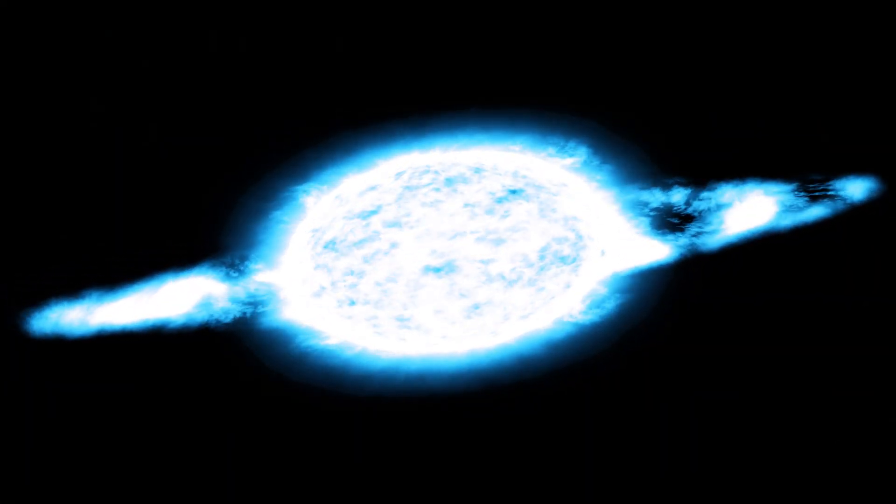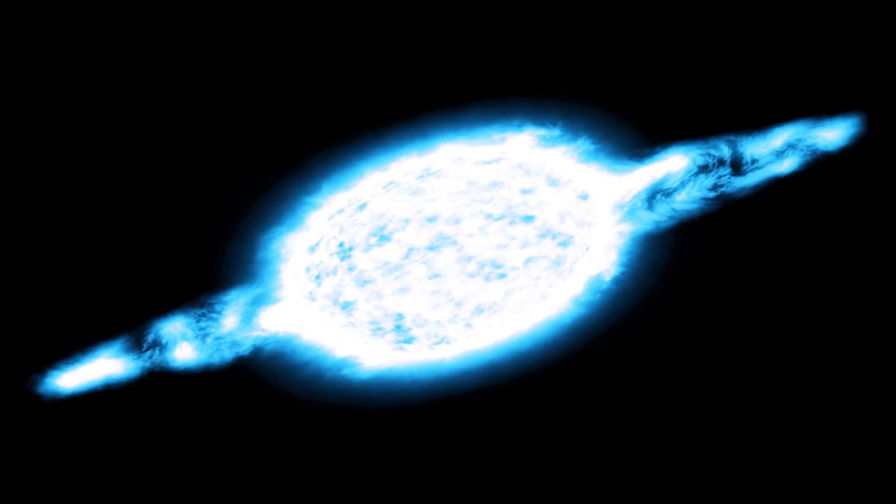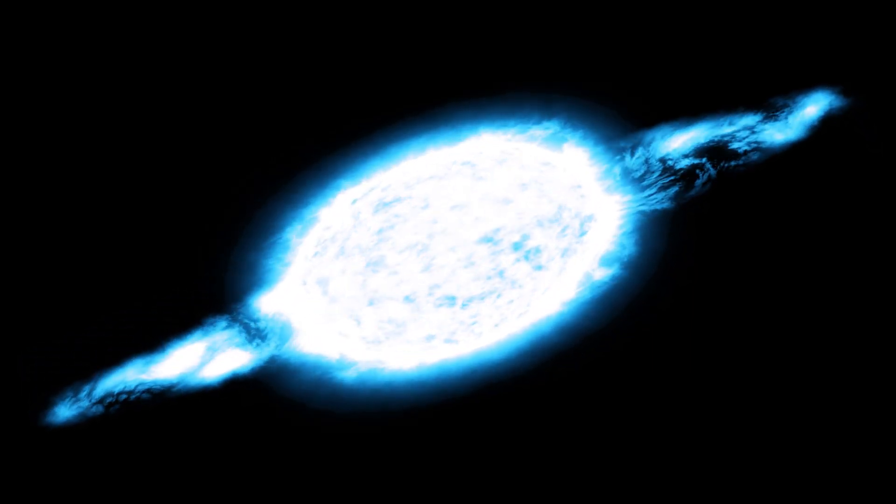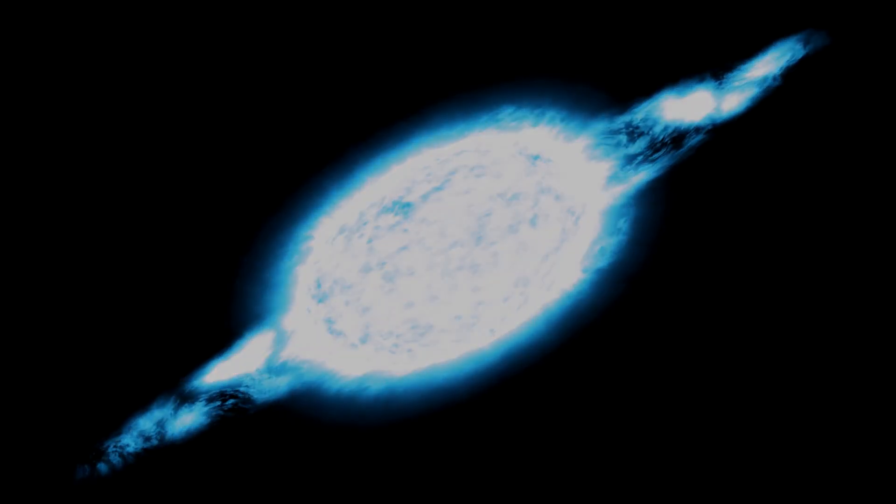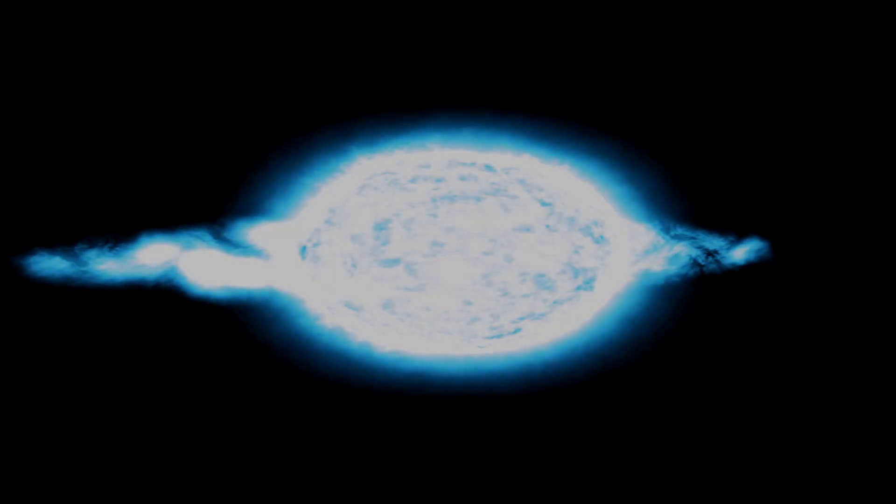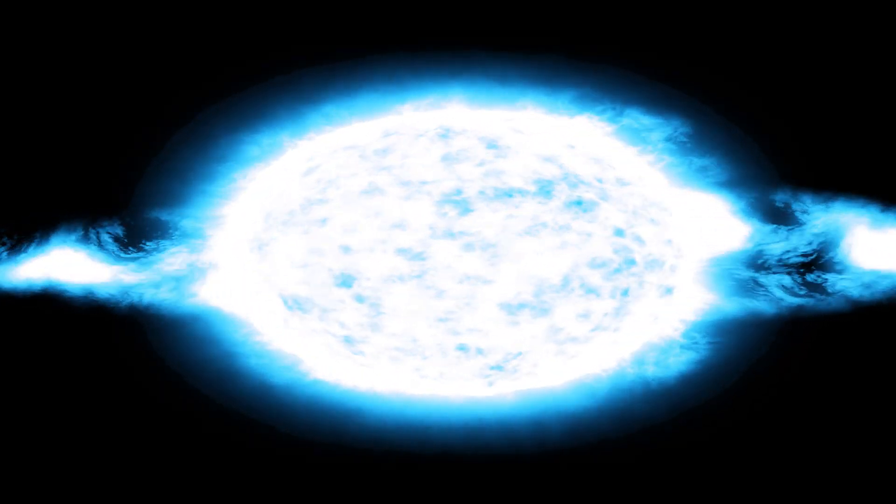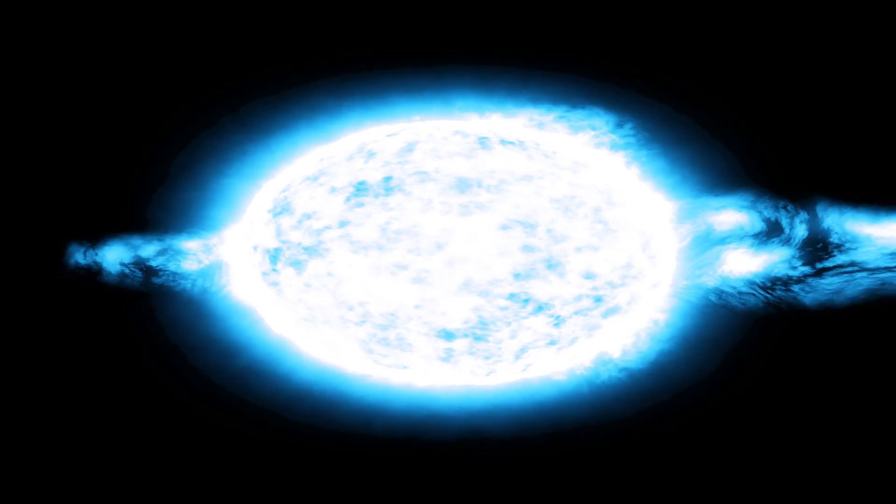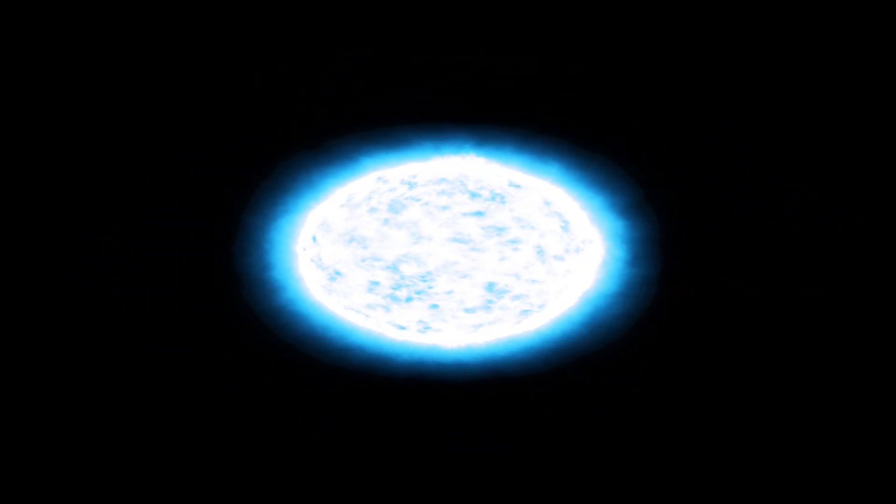Achernar A is a star of spectral class B3VPE and has a mass of about 6 solar masses and a radius of about 7 to 9 solar radii. Its luminosity is almost 3,500 solar luminosities and the temperature, due to its highly elongated shape, varies significantly depending on the latitude, with an average value of about 15,000 Kelvin.